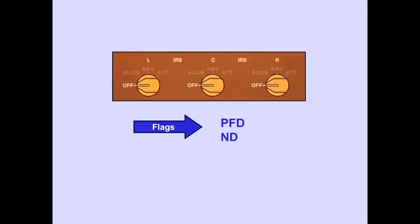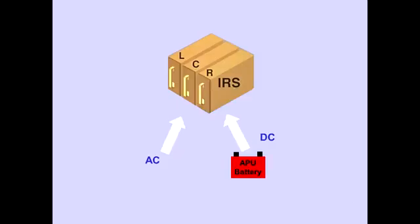When the selectors are off, information on various instruments are either flagged or not displayed. The IRS is normally powered by airplane AC power. Otherwise, the IRS will use DC power from the APU battery.